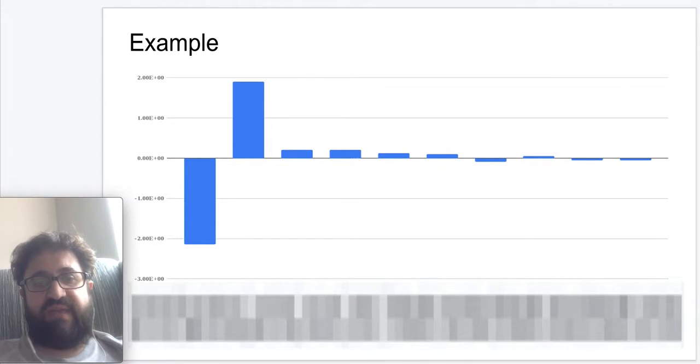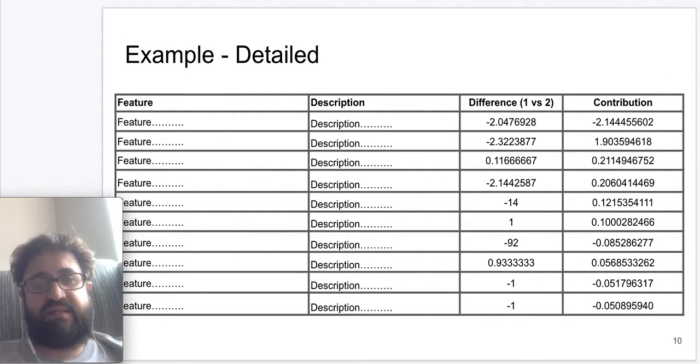Using such a method, we can attribute the score difference between two candidates to multiple features. And this attribution could be positive, which would mean a feature helped the candidate be ranked higher, or it could be negative, which means the feature could potentially have caused the candidate to be ranked lower. Here, we give another example where we had to obscure the feature names, but this shows the contribution of different features, description of features, as well as how the feature was differing between the first and the second candidate.